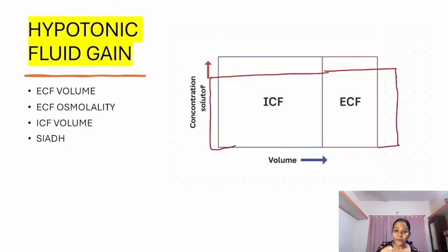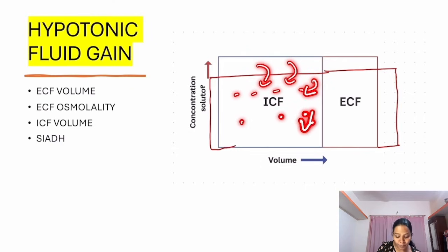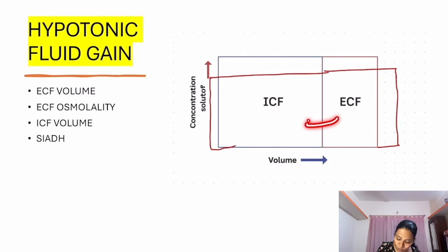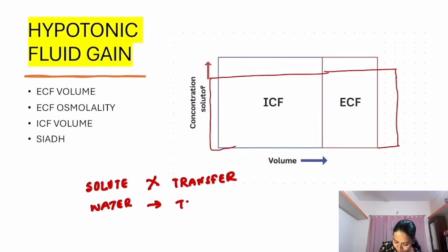In hypotonic fluid gain, fluid gain occurs and osmolality reduces. ICF must reduce its osmolality to match, so it takes in more fluid from ECF, diluting its solute concentration. ECF volume increases but tonicity is reduced. The underlying principle for all these conditions is that solutes are not allowed to transfer between compartments, whereas water is freely transferred. This can be confusing, but many exam questions come from this topic, so review it again.